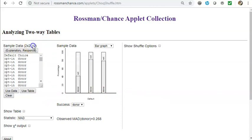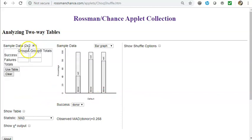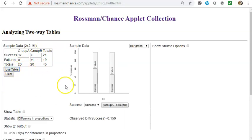I want to set this up so sample data is a 2 by 2 table. This is where I enter the original values from our table: 12 heads from the quarter, 9 heads from the nickel, and 8 and 11 for tails. You can see now my totals match up with the previous table. Make sure to hit use table, otherwise this app is going to stick with the default data.